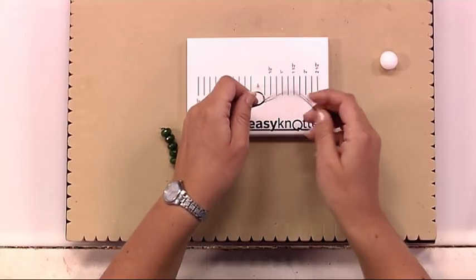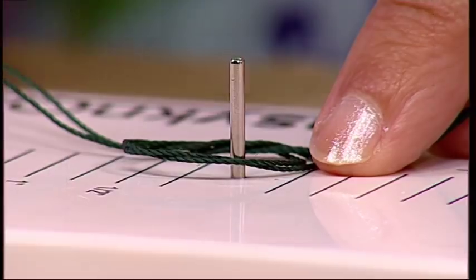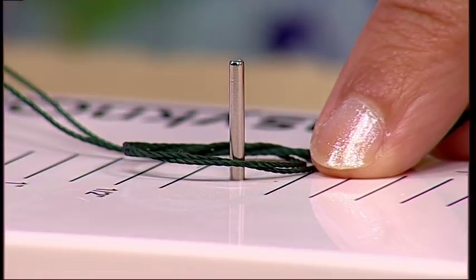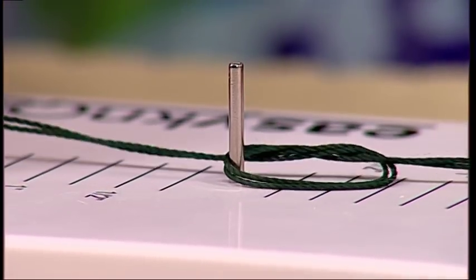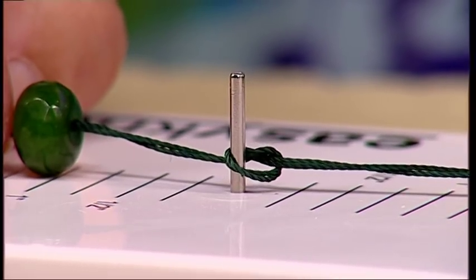Take the knot and put it over the knotting tool, then pull to the desired length. In this instance, I'd like an inch between my beads.